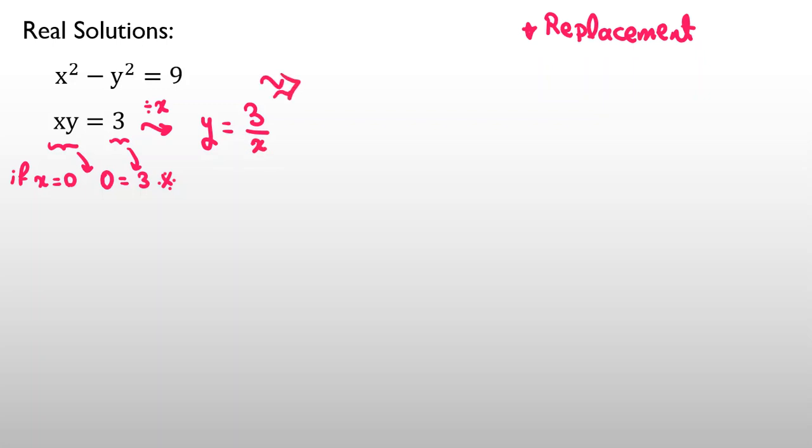And let's replace it in the first equation, x squared. We replace y with 3 over x squared equal to 9. So we can say x squared. Now, from power rule, we can say,